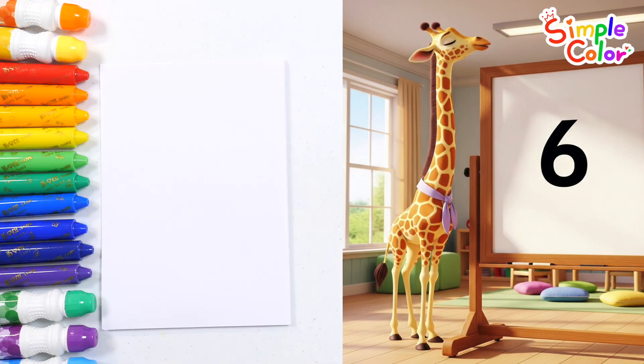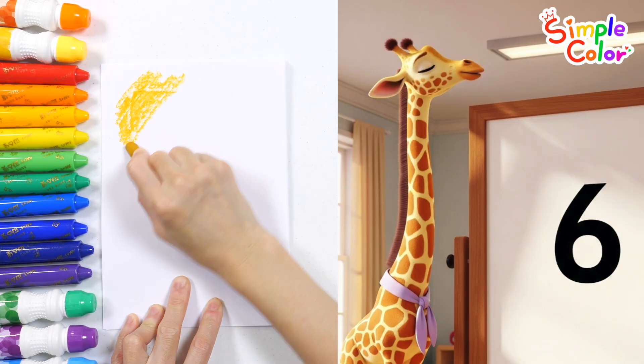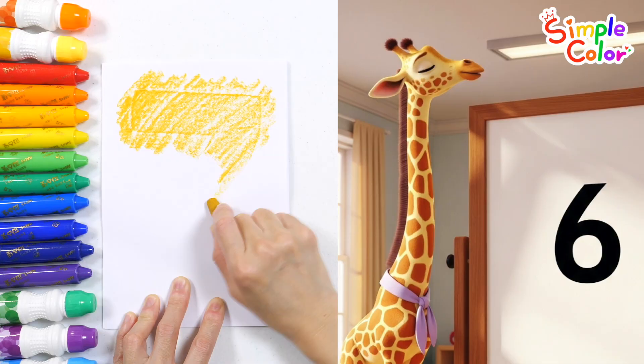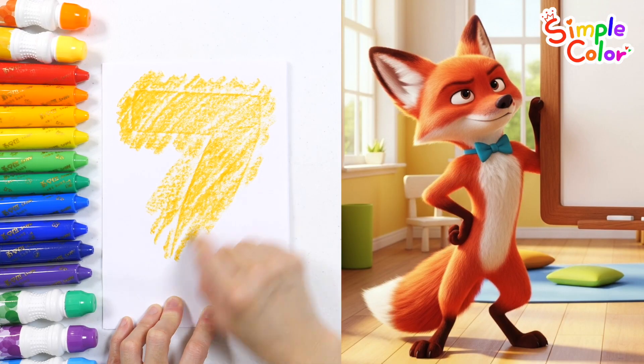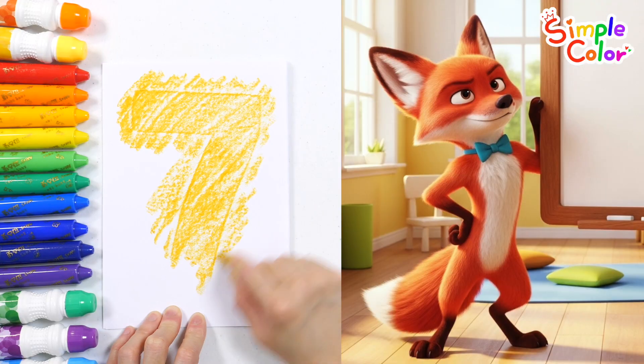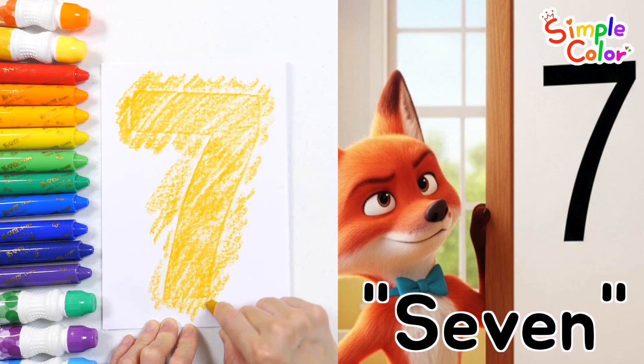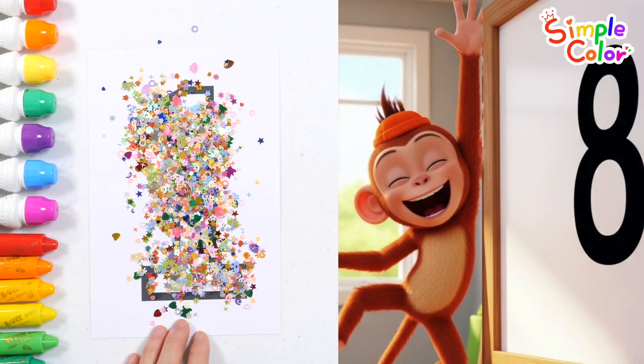Now it's the tall giraffe's turn. Looking at the graceful number six, shaped like its long neck, the giraffe says, six. The playful fox strikes a silly pose and says, this is seven! It looks cool like me! The monkey giggles and reads the number. This is eight!